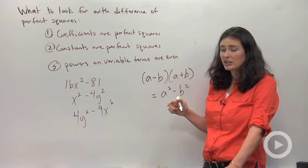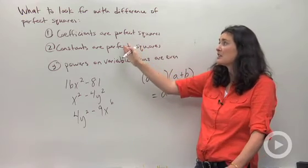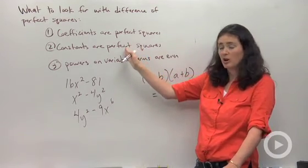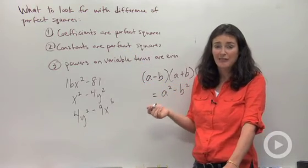So we're going to go through and look at a couple examples. Just keep in mind, this shortcut only works if you meet these three criteria: you have a difference problem, you have perfect square coefficients and constants, and the powers on both variables have to be even.